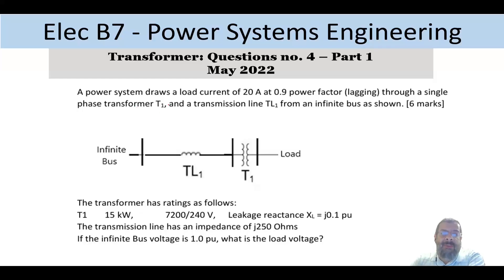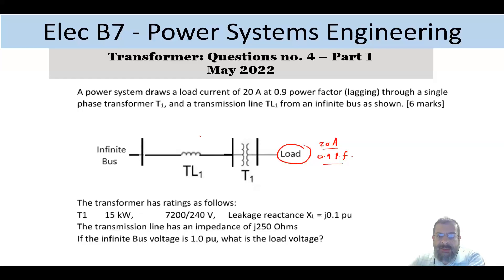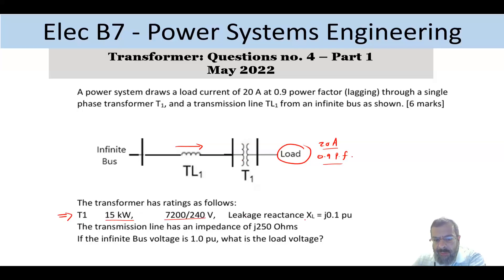A power system draws a load — the load consumes 20 amps at a 0.9 power factor. The current comes through a transmission line and a transformer. The transformer is given with a power rating, a voltage ratio, and a leakage reactance in per unit, not in ohms.